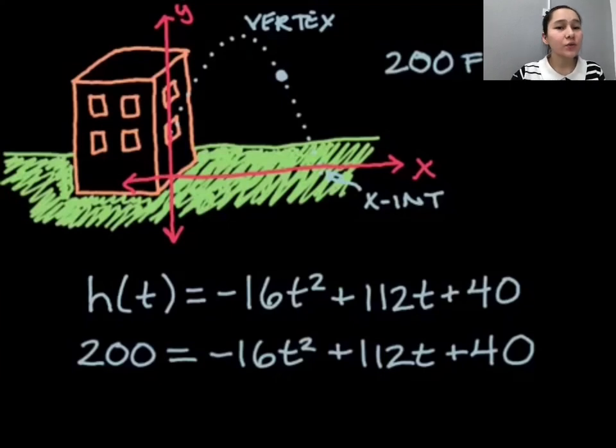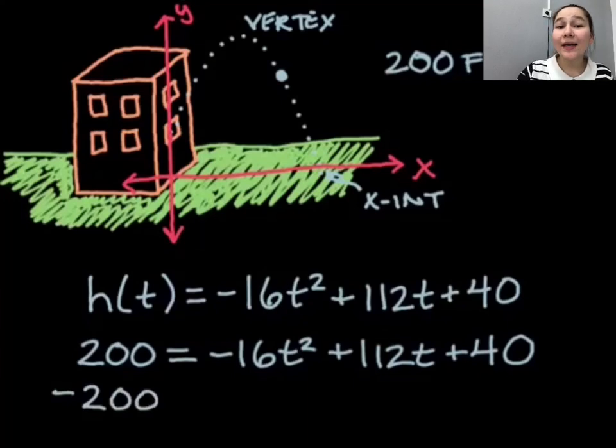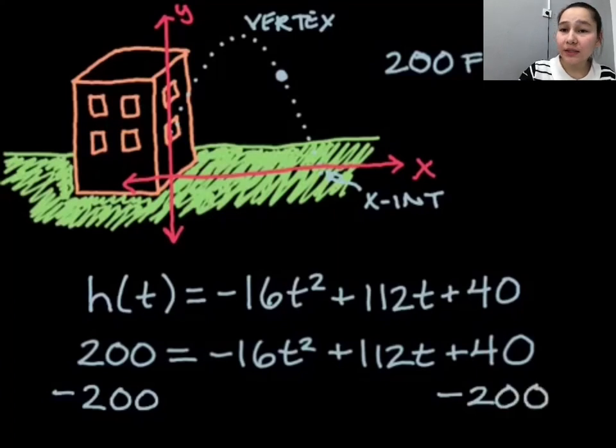So what I'm going to do to help with that is I'm going to go ahead and subtract 200 from both sides. That way I get this equal to zero. And that step is critical for most quadratic equations.